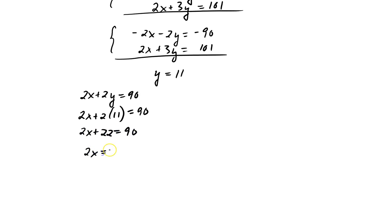So 2x is equal to 90 take away 22, which is 68. So x is equal to 34.